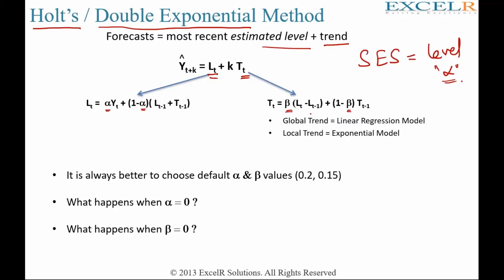If you want to capture the global trend, you need a linear regression model. If you want to capture the local trend, it's an exponential model. So data-driven approaches would capture the local trend using the exponential model.